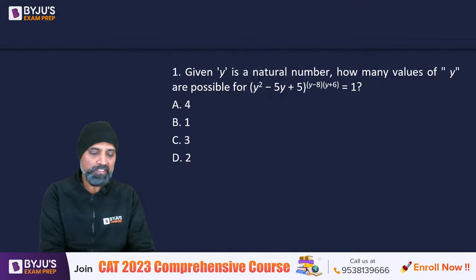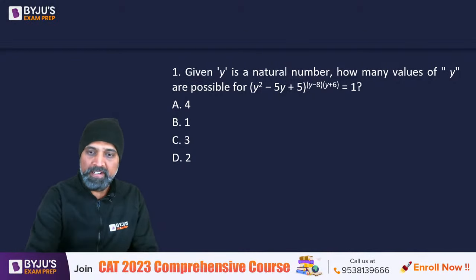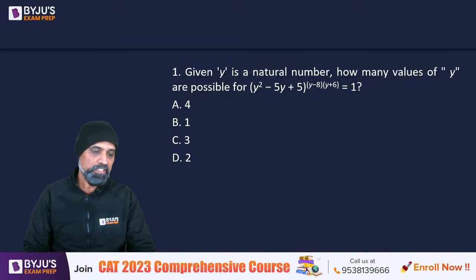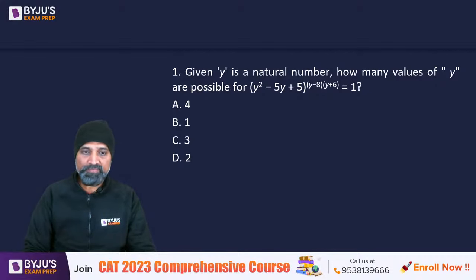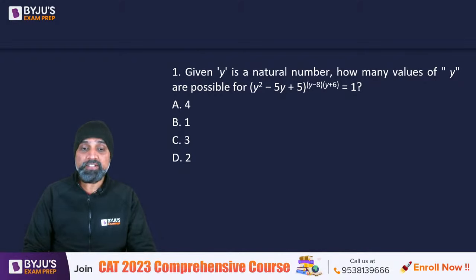This is the first question. Given y is a natural number, how many values of y are possible for y squared minus 5y plus 5 raised to the power of y minus 8 times y plus 6 equals 1?